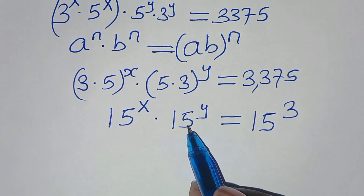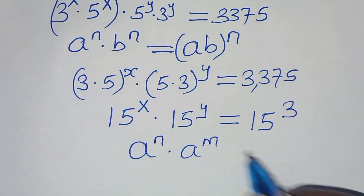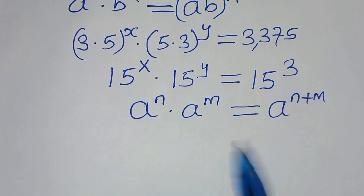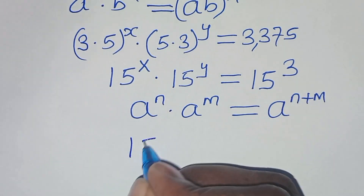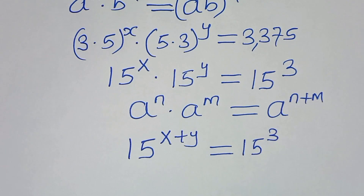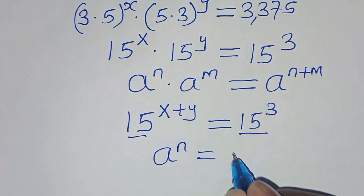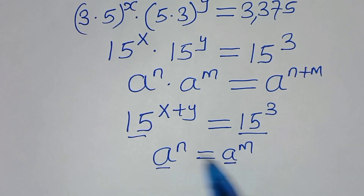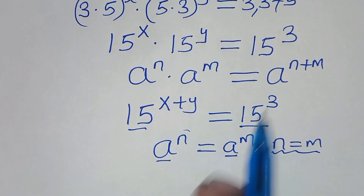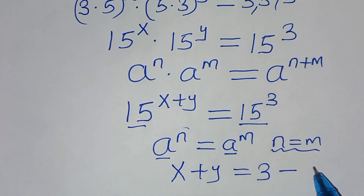Now, 15 raised to the power x times 15 raised to the power y is in the form of a to the power of n times a to the power of m, which we can express as a to the power of n plus m. Applying this exponent property, we have 15 raised to the power x plus y, this is equal to 15 to the power of 3. Since the bases are common, exponent x plus y is equal to 3. Let's call this equation 3.